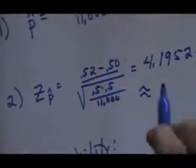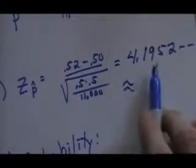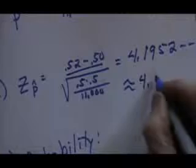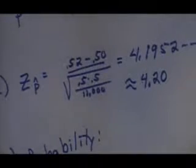And we always round z-scores to two decimal places. So this is going to be—this 5 says round the 9 up—so it would be 4.20.